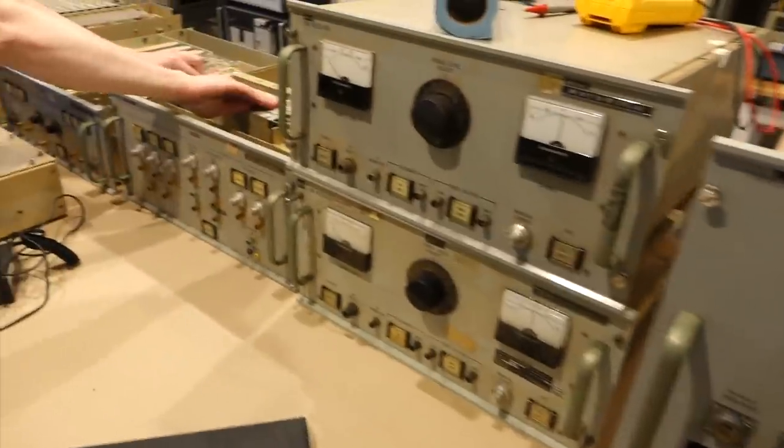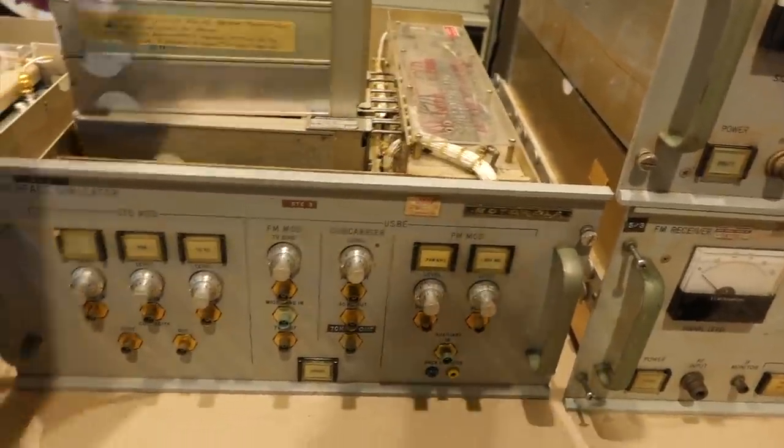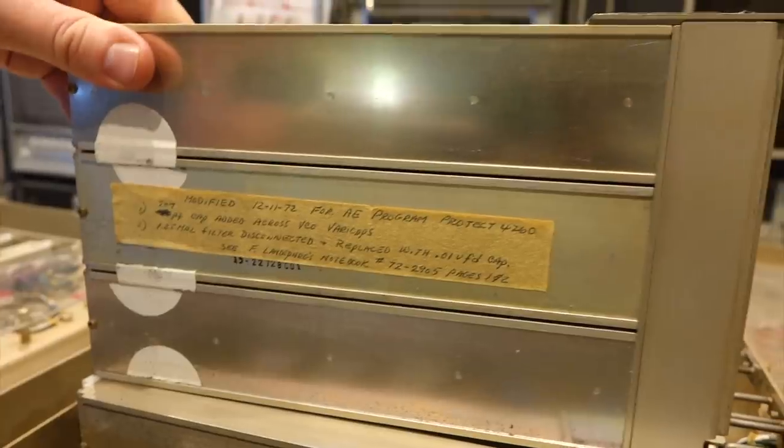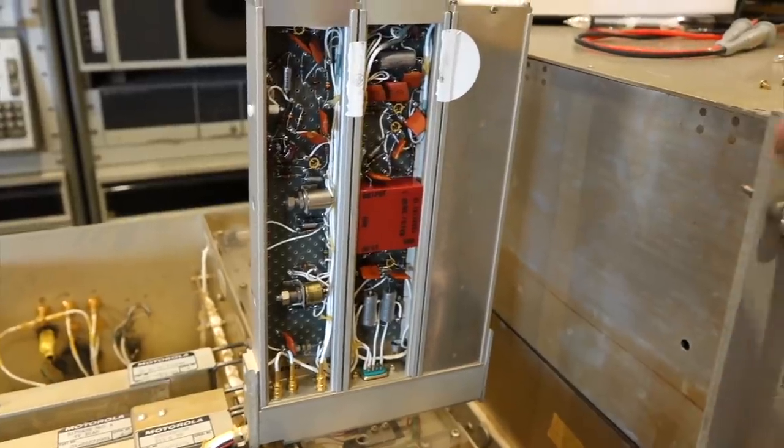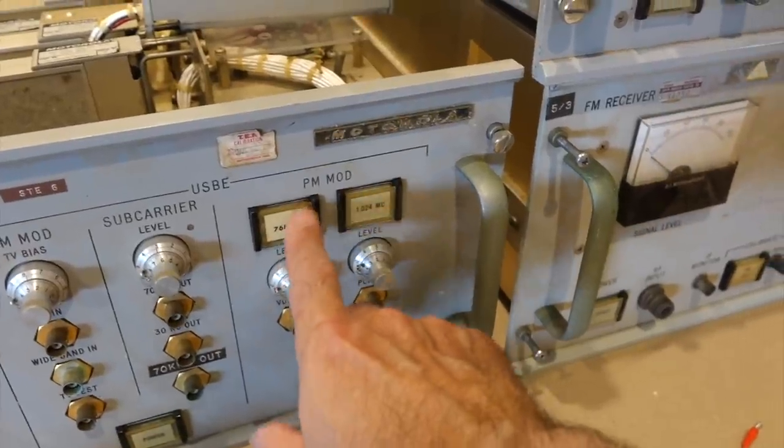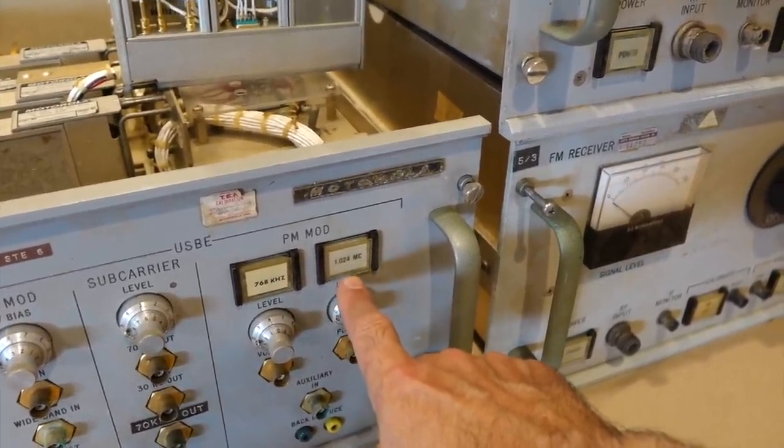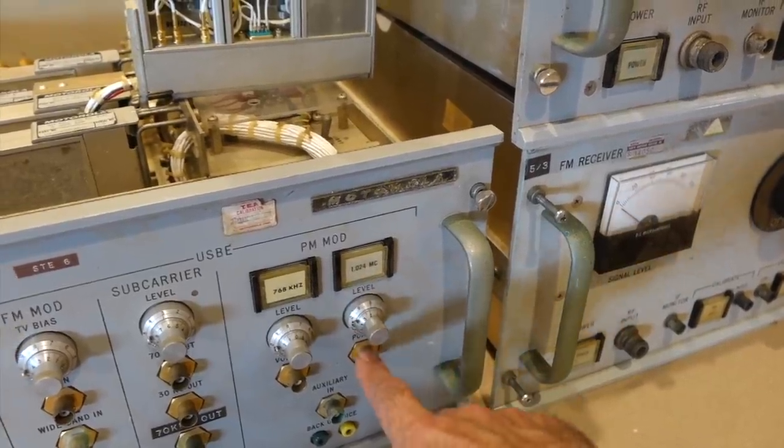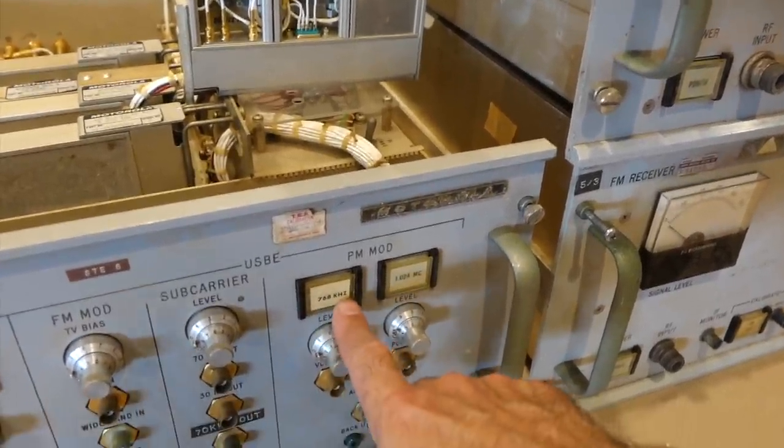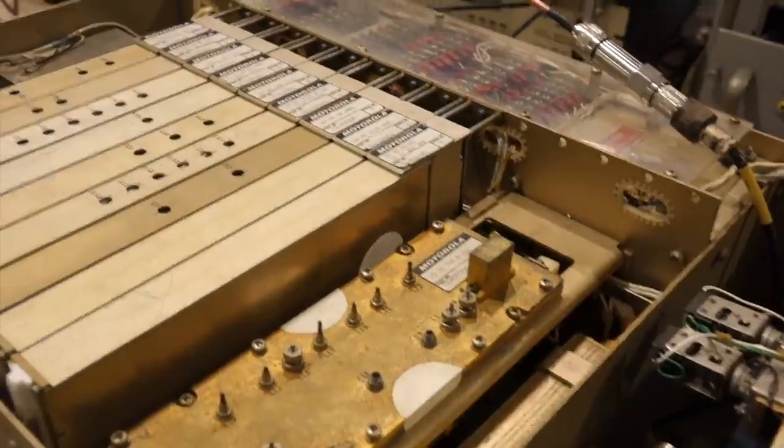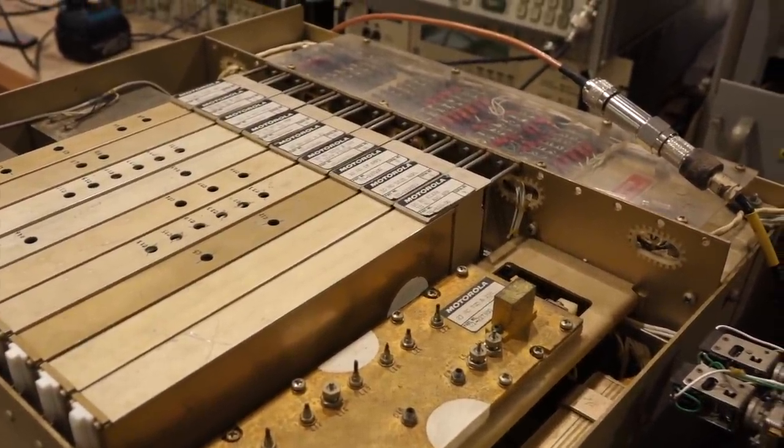Do you think that there's any chance that this is something that they changed when they were doing whatever modification they were doing? So Mike is on to something. There is evidence that the boxes have been modified after the Apollo life. Some mods are documented on stickers on the modules themselves. Some we can actually tell by looking at the notes and the components. Others we can see from the front panel labels. For example, this 1.024 subcarrier button is an Apollo subcarrier. But the 768 on the left, that is not an Apollo subcarrier. So God knows what other mods could be lurking in there.